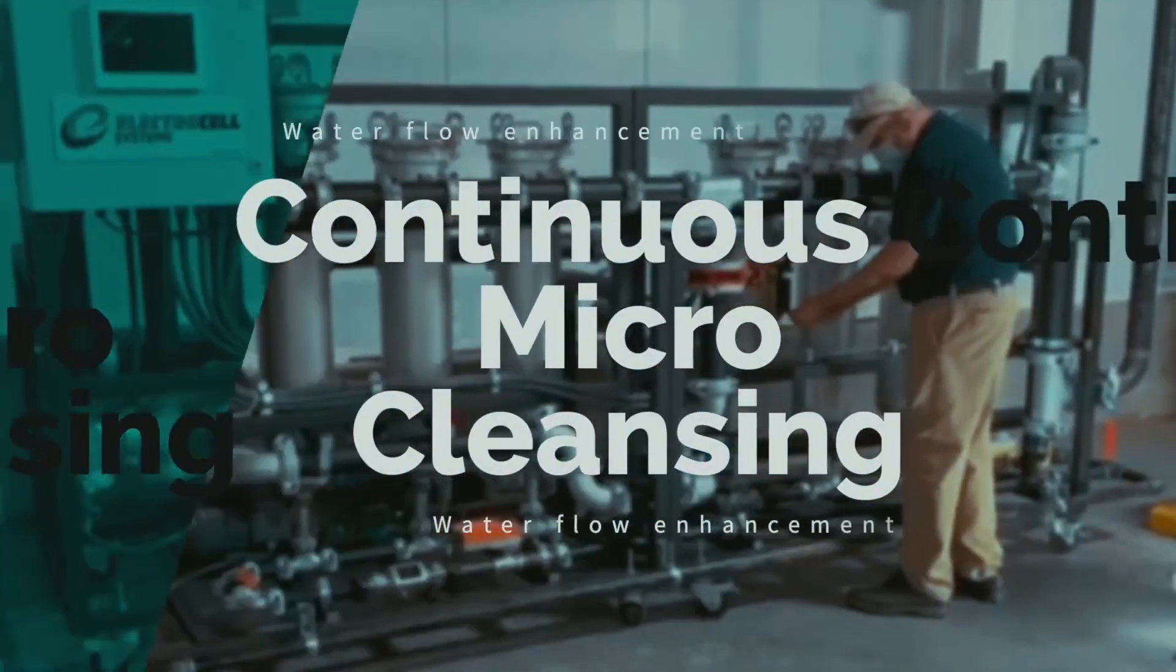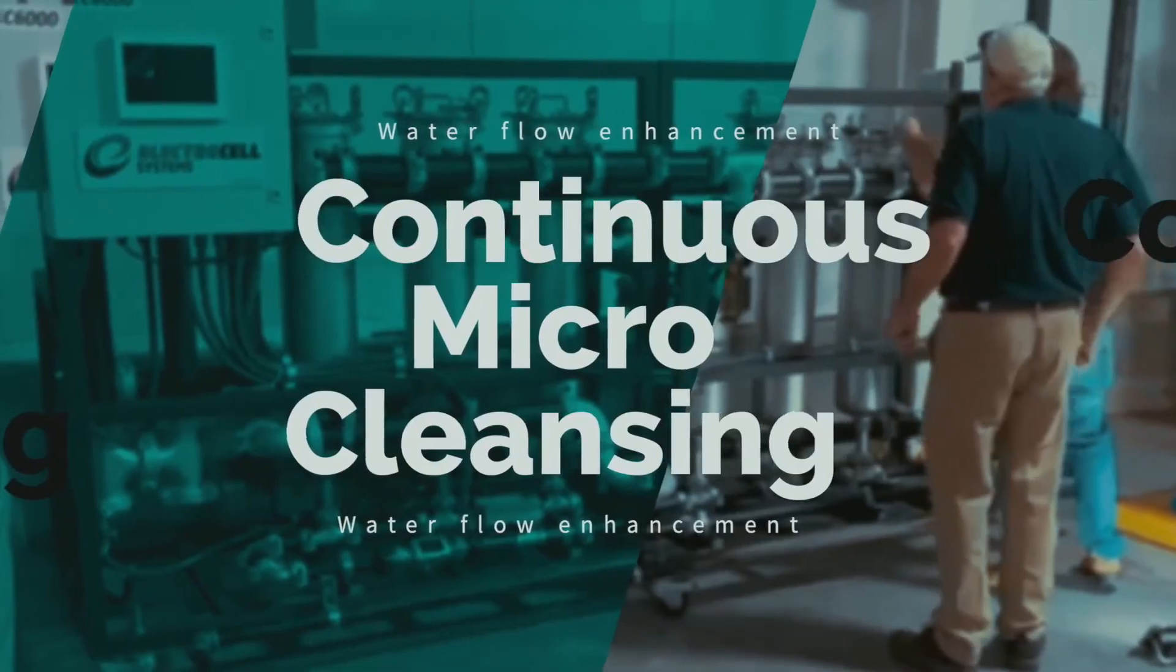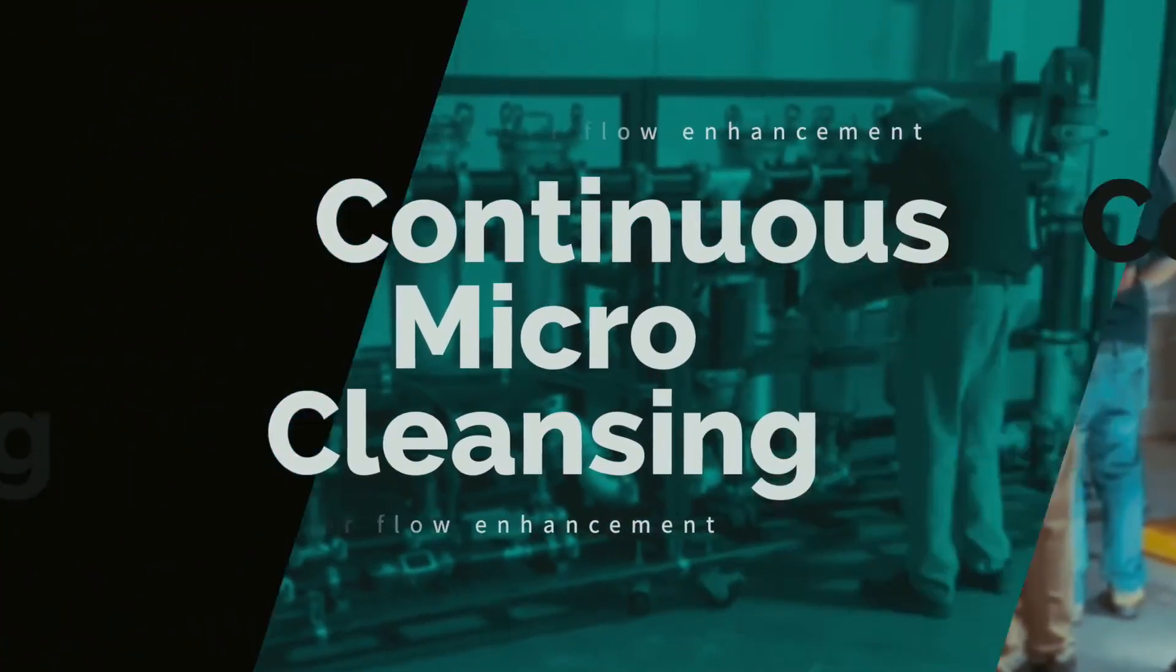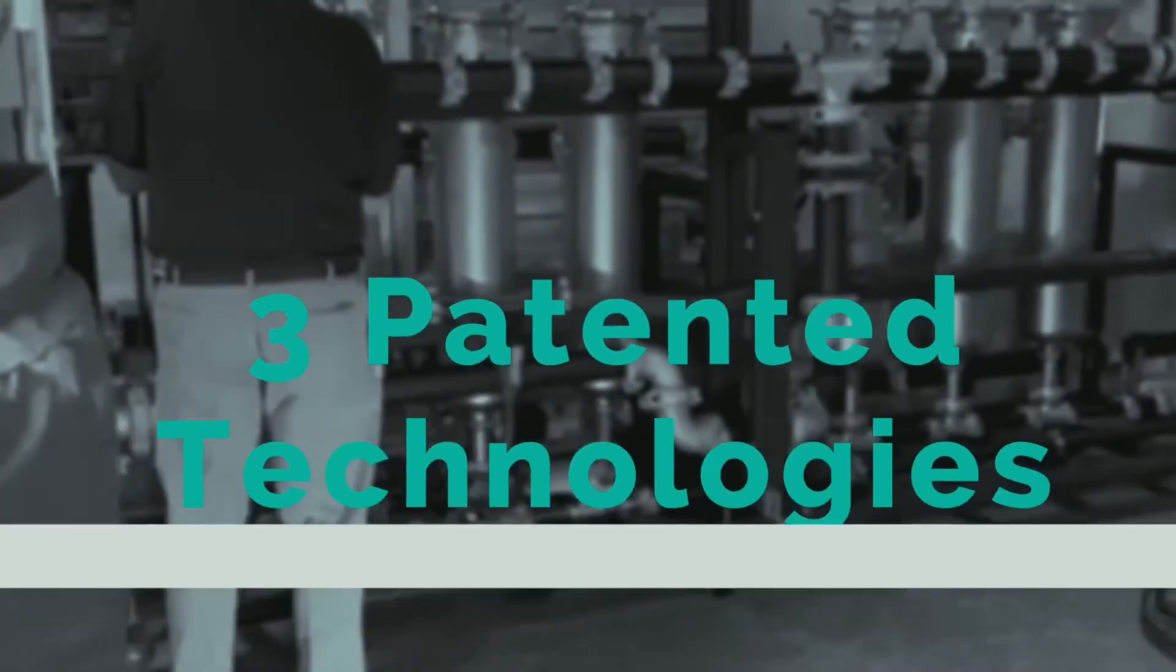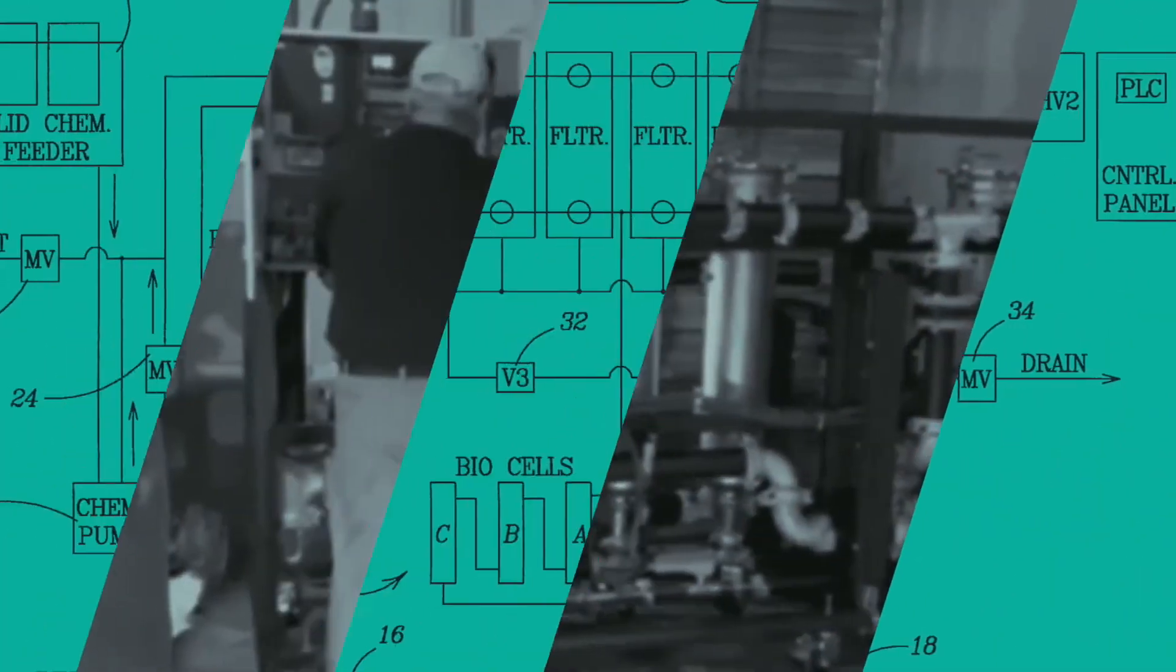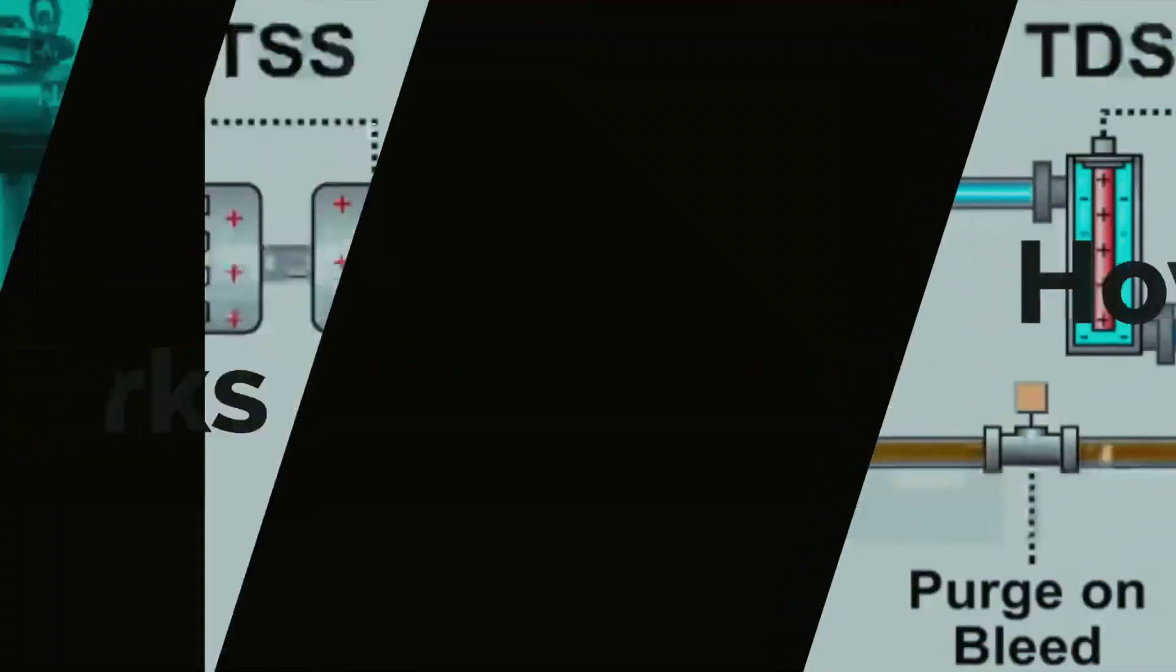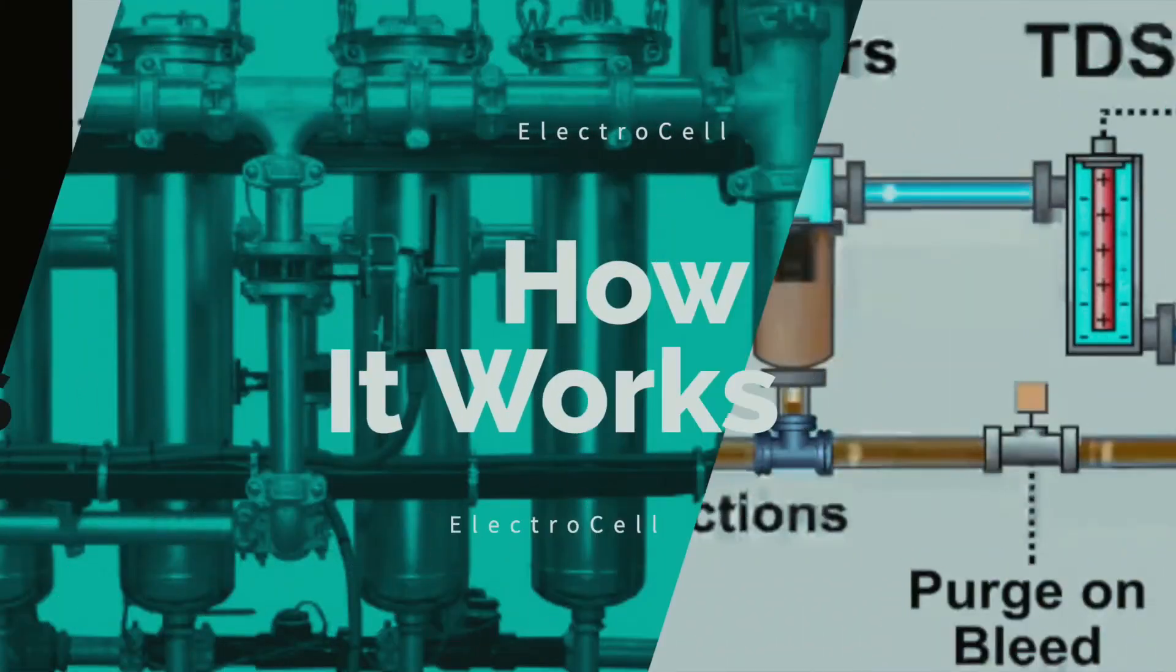The ElectroCell process of continuous micro cleansing and water flow enhancement is unlike any other product on the market today. Regardless of size, all ElectroCell skids utilize three patented technologies working synergistically to achieve maximum water enhancement results. Let's take a schematic look at how it works.